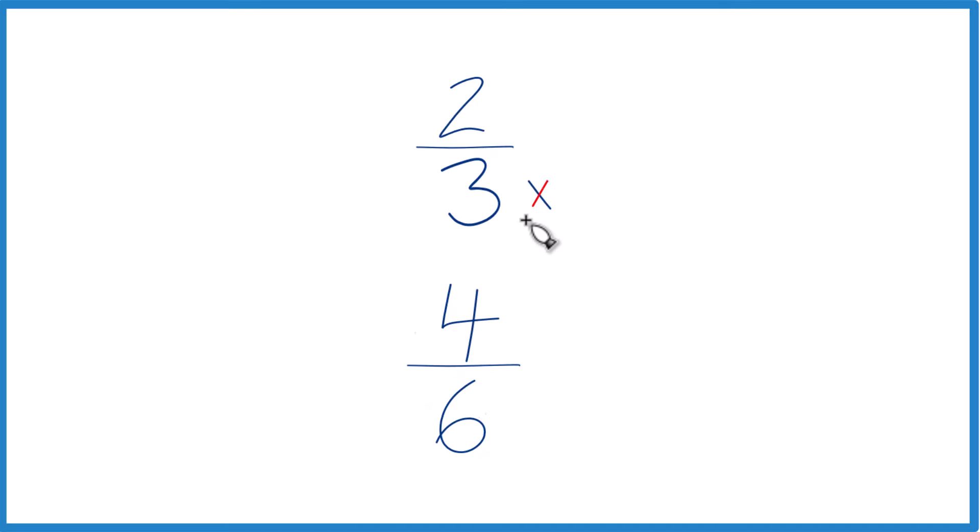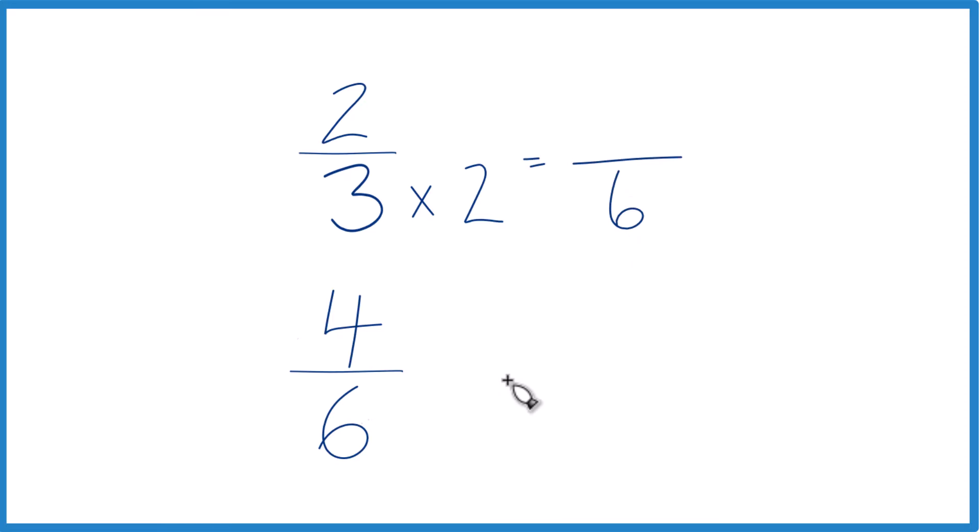Let's just multiply 3 times 2, because 3 times 2 equals 6. And down here we already have 6, so let's just keep that the same, four-sixths.